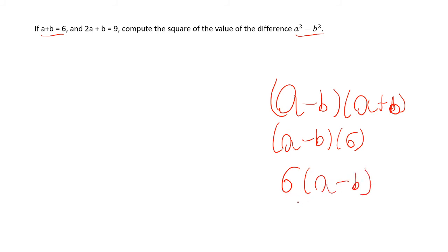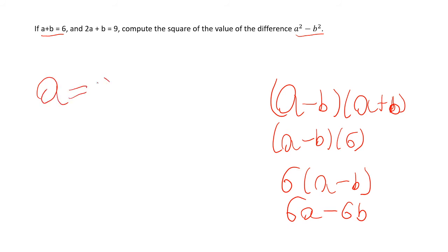That's not going to help us too much though. So: 2a plus b equals 9, and a plus b equals 6. Let's try to solve for a variable. If a plus b equals 6, we get a equals 6 minus b. Then looking at the second equation: 2a plus b equals 9, and we know a equals 6 minus b.